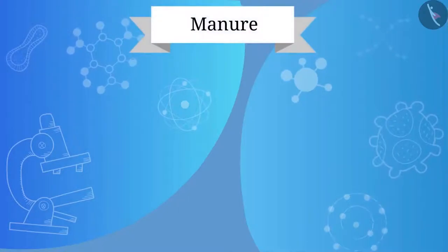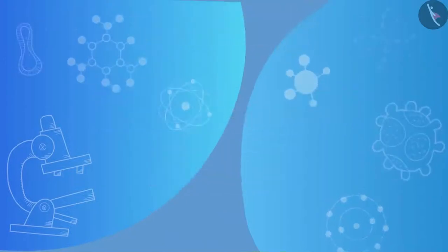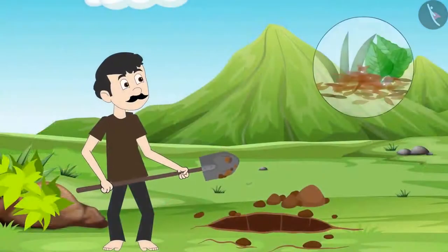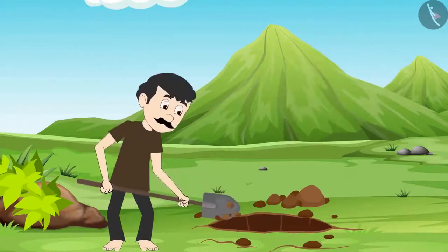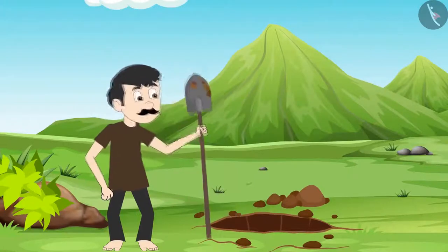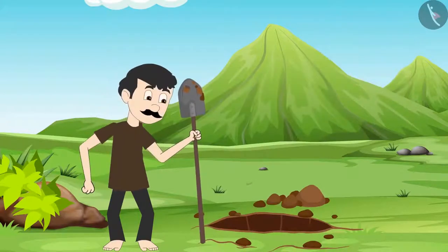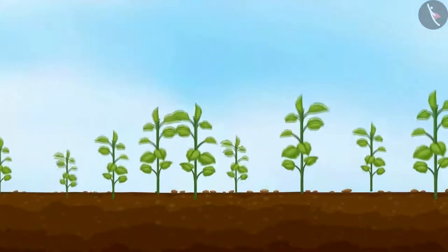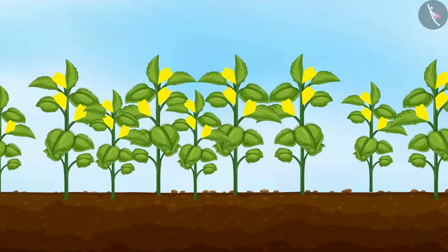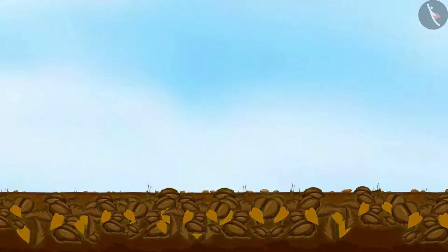Manure are of two types: compost and vermicompost, and the other is green manure. In the compost and vermicompost process, vegetable waste, animal feces, household waste, etc., are decomposed in pits — this is known as compost. To increase this decomposition process, earthworms are also used and this is called vermicompost. For green manure, before sowing the seeds of the crop, some plants like sunhemp or guar are grown and then buried in the soil and mulched. These green plants thus turn into green manure which helps to enrich the soil.